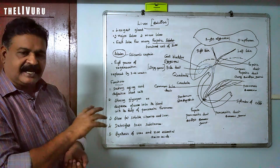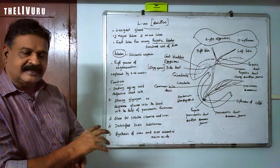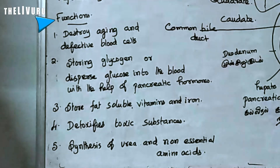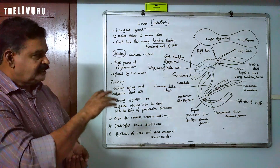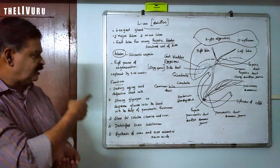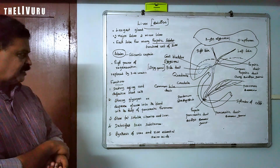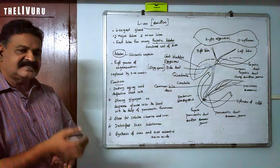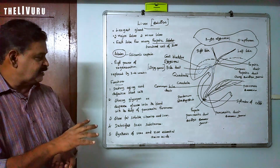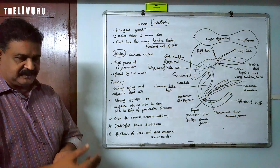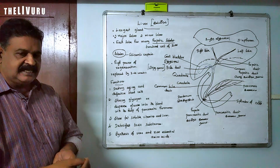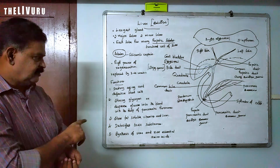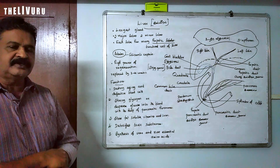Now let's look at the functions of the liver. What is the composition of bile? What are the functions of the liver? The liver secretes bile. It also destroys aging and defective blood cells.